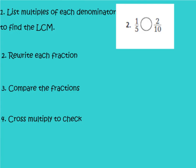Let's look at number two. Number two is asking us to compare one-fifth and two-tenths. The strategy we're going to use is to find common denominators so that we are working with the same equal parts. Our steps for finding common denominators: step one, we need to list the multiples of each denominator to find the LCM, or the least common multiple. So we need to list multiples of 5 and 10.